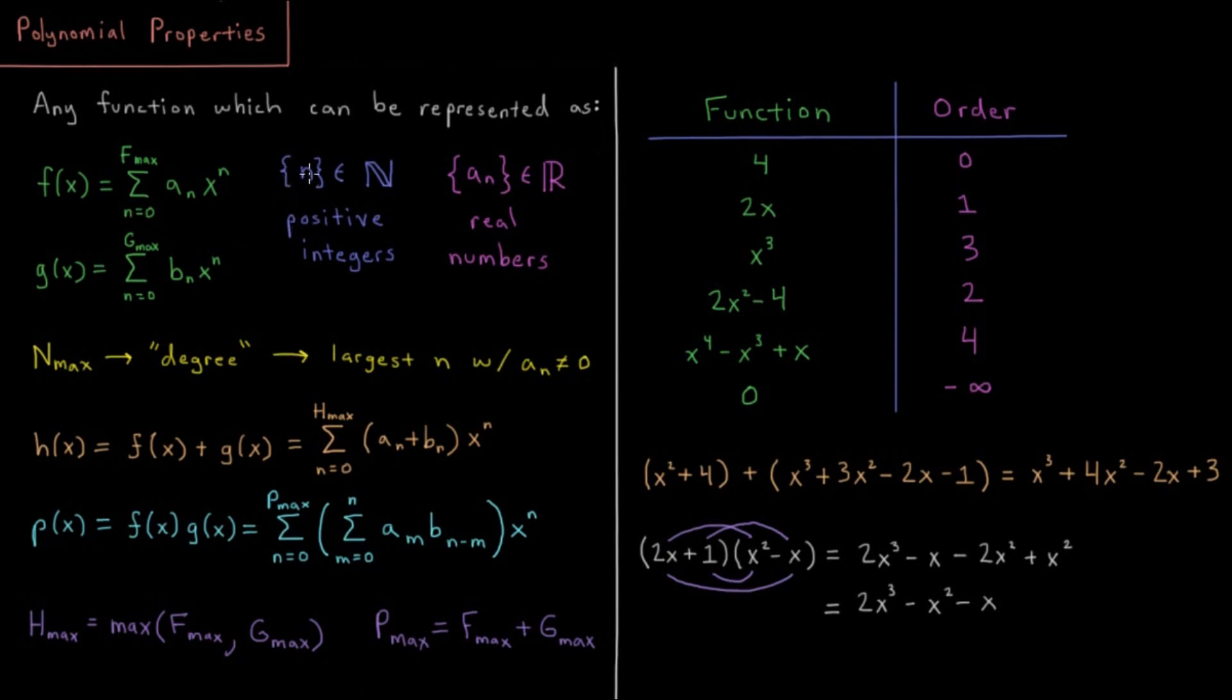And for the n, those have to be positive or more accurately, I should say non-negative integers. So they start at 0, then they go to 1, 2, 3, all the way up to f max.